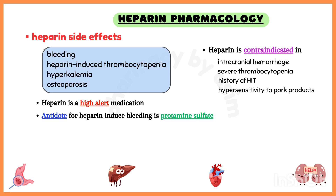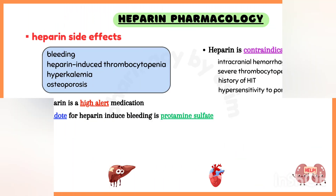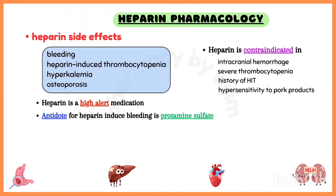Heparin is a high alert medication. The antidote for heparin-induced bleeding is protamine sulfate. Heparin is contraindicated in uncontrolled active bleeding or intracranial hemorrhage, severe thrombocytopenia, history of HIT, and hypersensitivity to pork products.